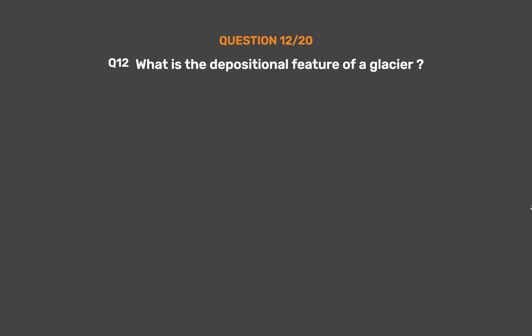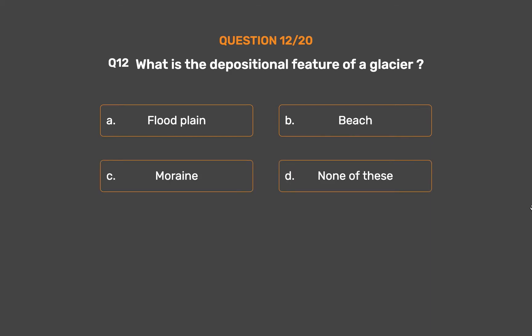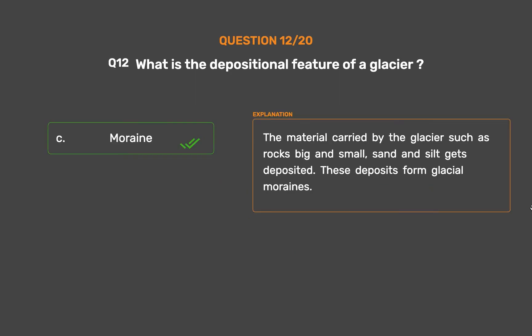Question No. 12: What is the depositional feature of a glacier? Option A: Floodplain. Option B: Beach. Option C: Moraine. Option D: None of these. The correct answer is Option C: Moraine. The material carried by the glacier, such as rocks, small sand and silt, gets deposited to form glacial moraines.